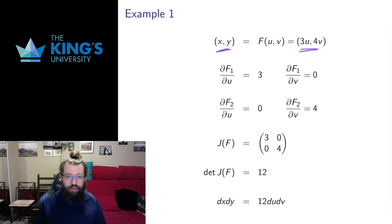So I have x, y is some function of u, v. This is a linear change of variables. x is 3u, y is 4v. If I look at the partial derivatives, I get these. If I put them in the Jacobian matrix, I get this. If I take the determinant, I get 12.